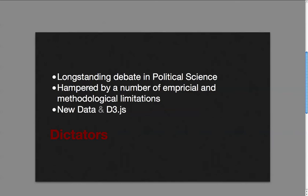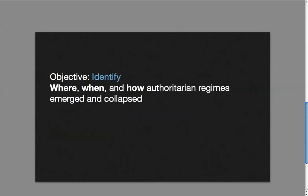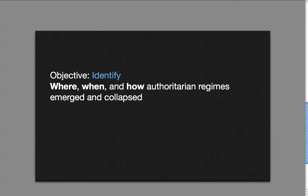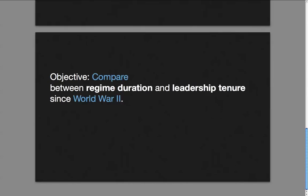We're leveraging two new data sets from 2012, along with D3, a JavaScript library, to map authoritarian regime resilience and collapse from 1946 to 2010. Political scientists will be able to use our map to identify where, when, and how authoritarian regimes emerged and collapsed, as well as to compare authoritarian regime duration and leadership tenure since World War II.